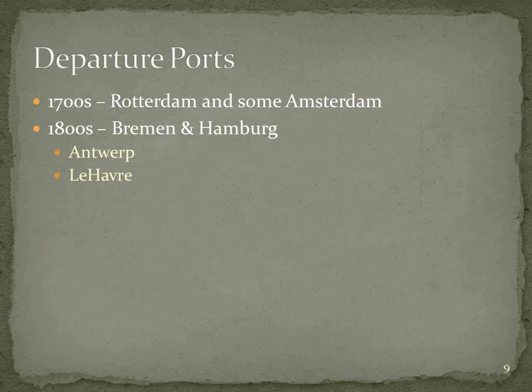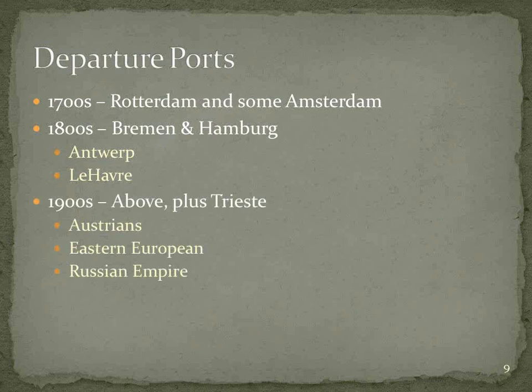The Dutch ports became less relevant in the 1800s, although Antwerp in Belgium and Le Havre in France were the ports of choice for a lot of Germans, particularly those leaving from southern parts of Germany. In the 1900s, those continued to be major ports, but also Trieste — on the border essentially between Italy and Croatia — where a lot of eastern Germans from the Austrian Empire and Eastern Europe, even those leaving from the Russian Empire and the Black Sea Germans in Ukraine, tended to leave from those more southern Mediterranean ports.